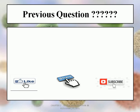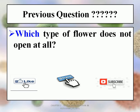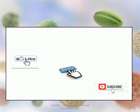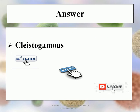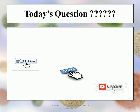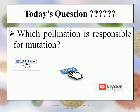Now it's time to answer the previous question: Which type of flower does not open at all? The answer is C. Cleistogamy. Yes, Cleistogamous flowers do not open at all. Now take a note and write today's question: Which pollination is responsible for mutation? Think about it and write to me in the comment section.